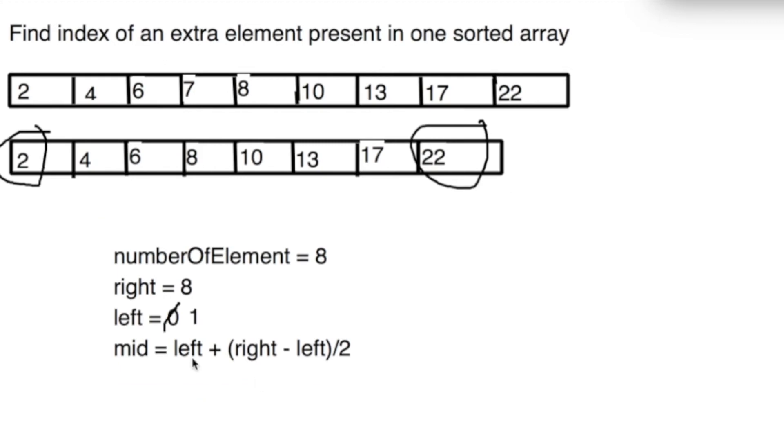Left should be 1 if we start indexing from 1. So now our right is 8, left is 1, so we calculate the mid value which is 4. So 4 is 8. Now we check with the fourth element in the first array.